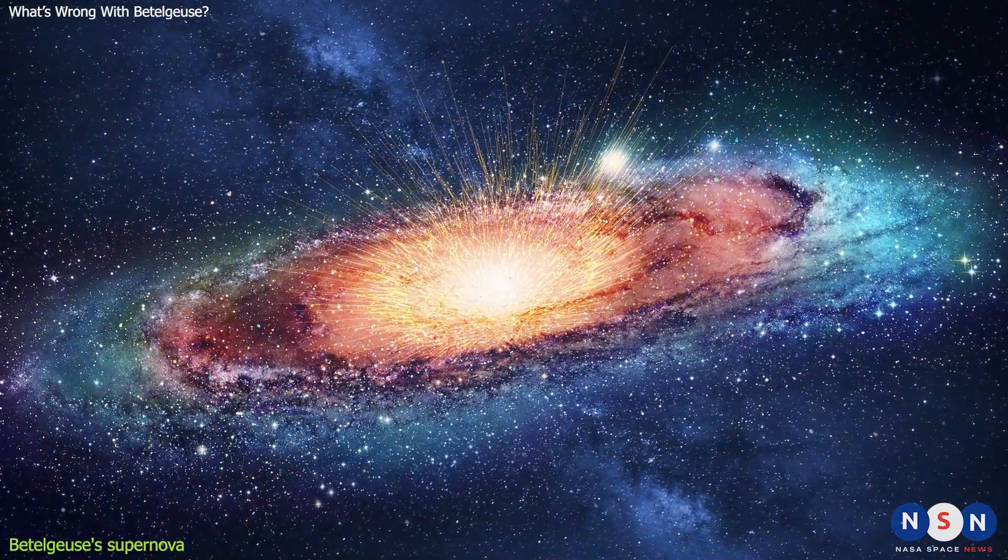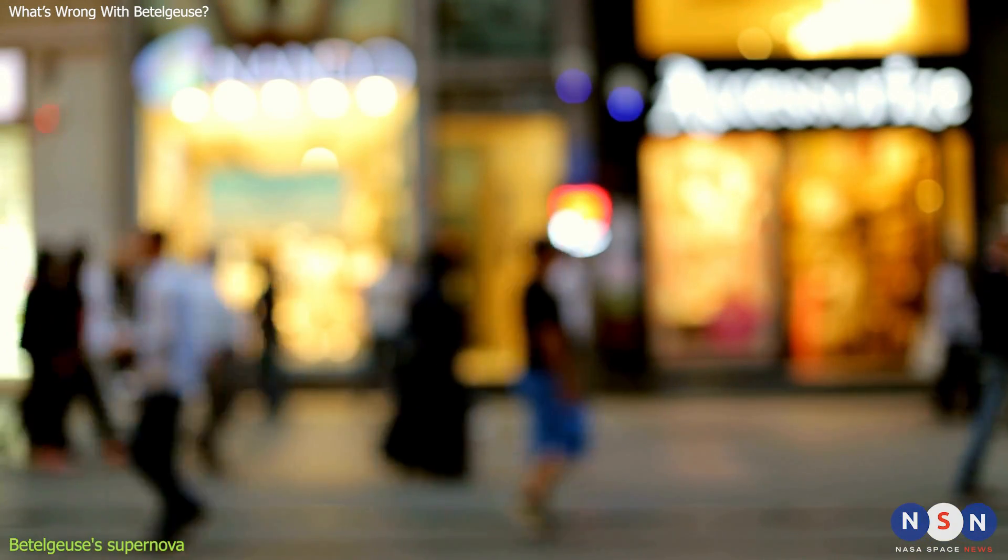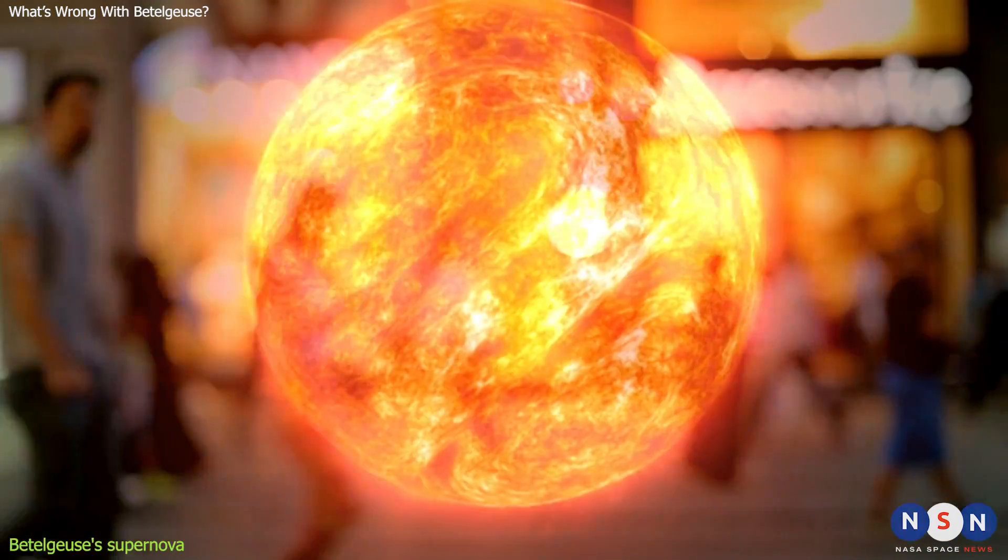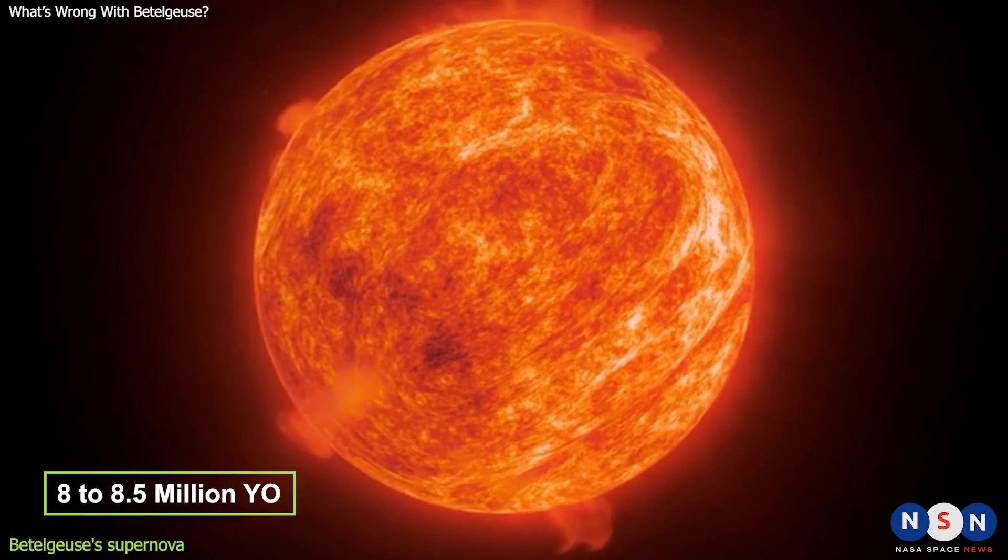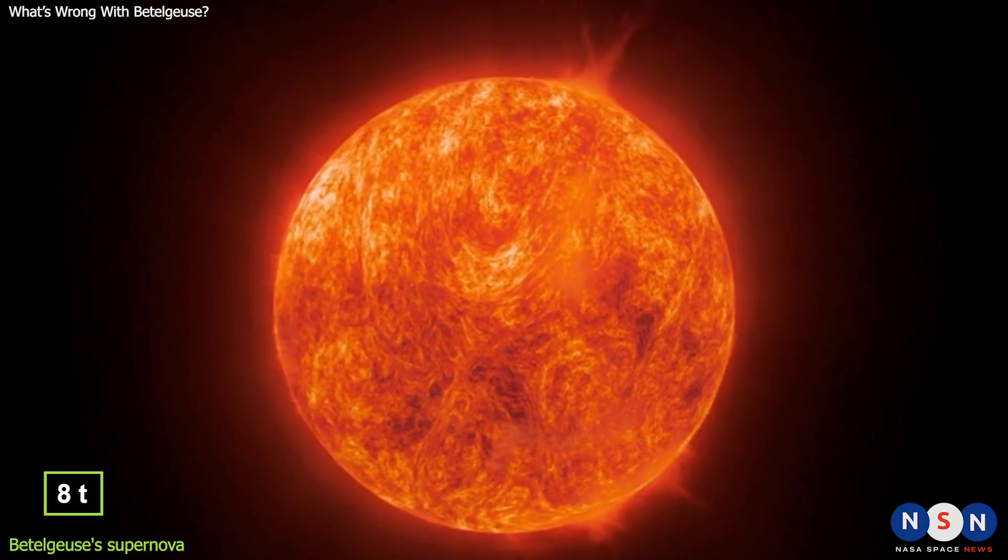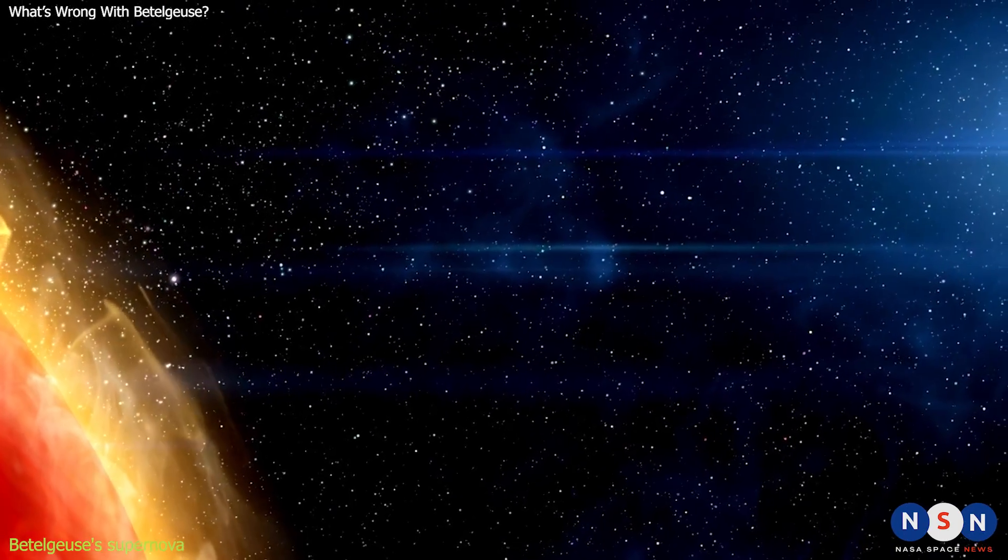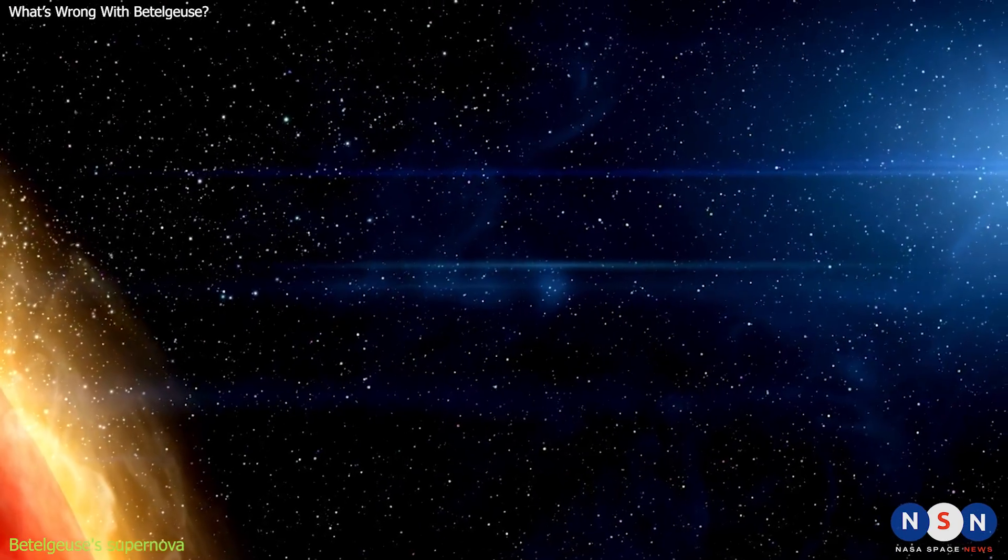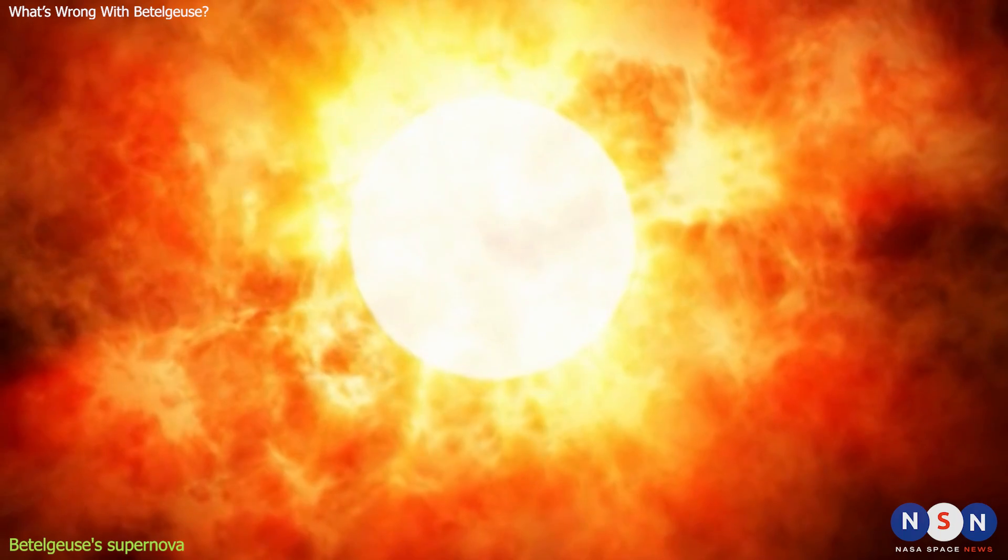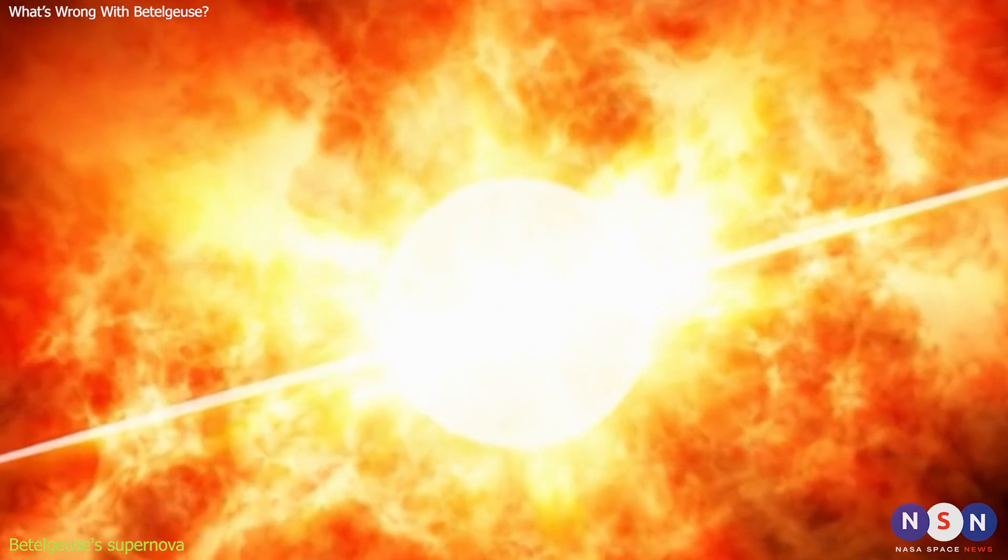Betelgeuse is definitely on the brink of death in cosmic timescales, but on human timescales, it's still a long way to go. Astronomers estimate that Betelgeuse is about 8 to 8.5 million years old, which is very young for a star. But because it's so massive, it has burned through its fuel much faster than smaller stars like the Sun. It's now in the final stages of its life, but it could still last for another 100,000 years or more before it goes supernova.